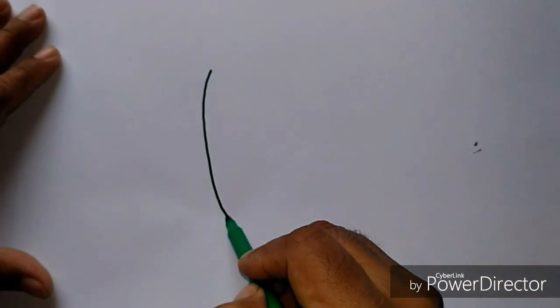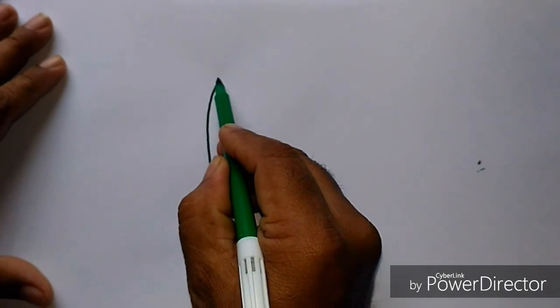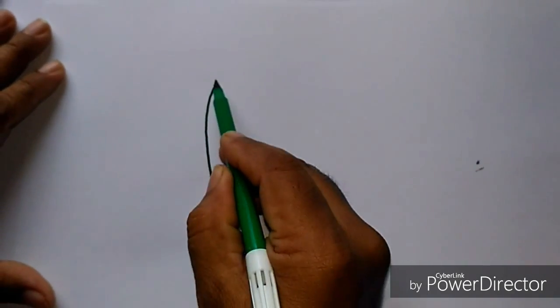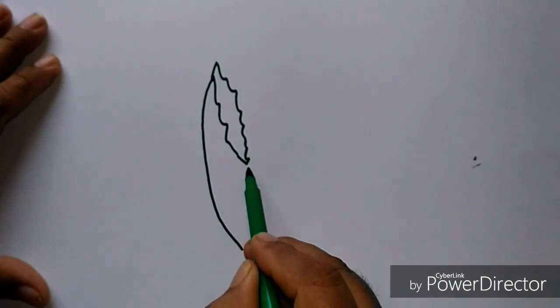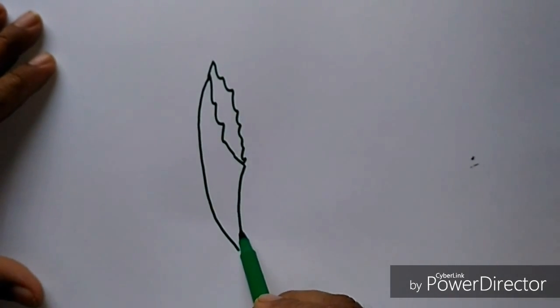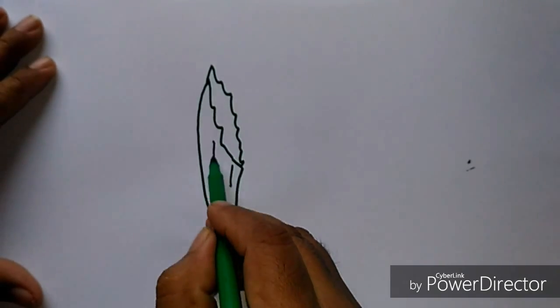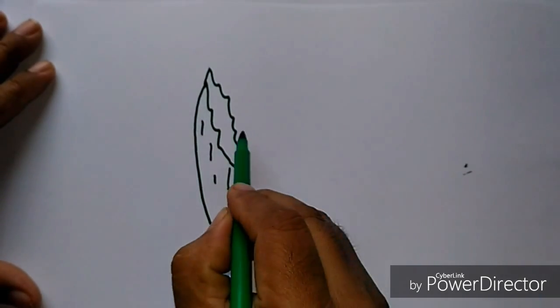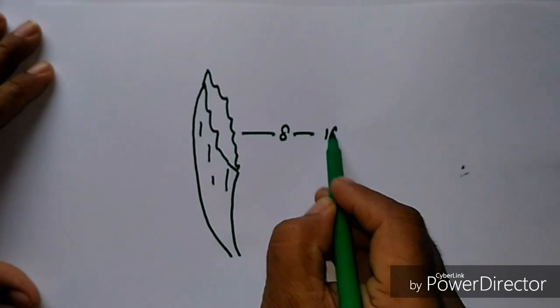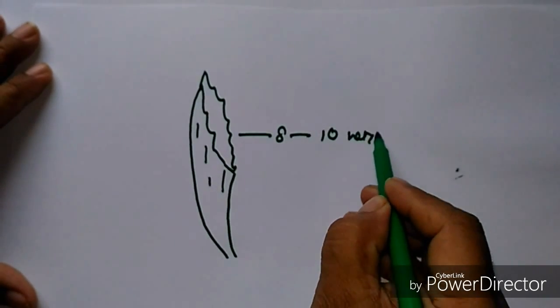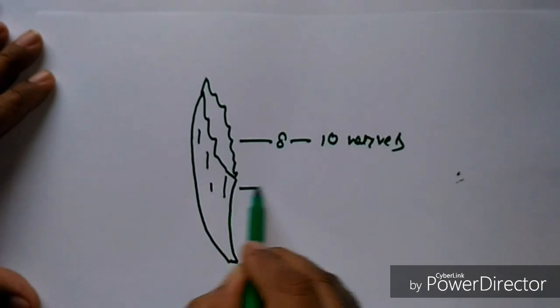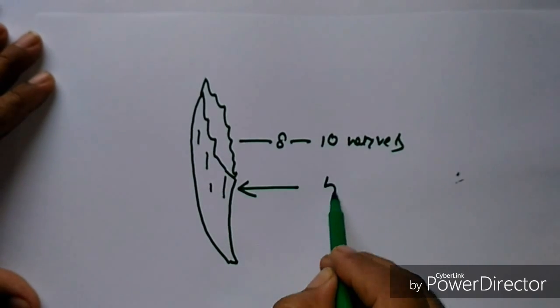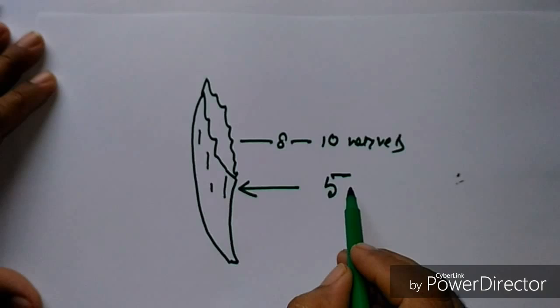This is the calyx tube. And these are the teeth. The tube is slightly curved, having nerves, 8 to 10 nerves.